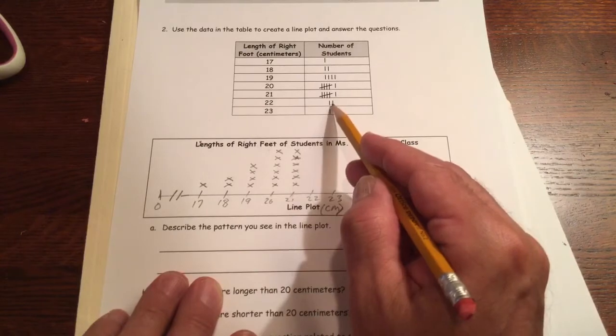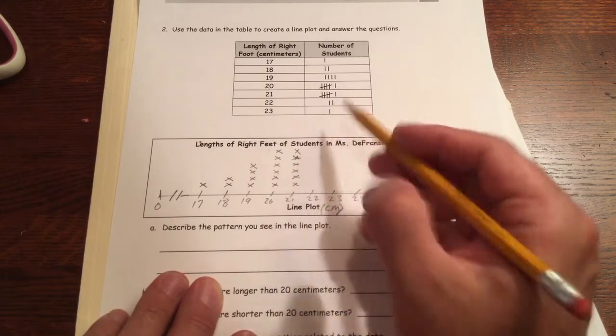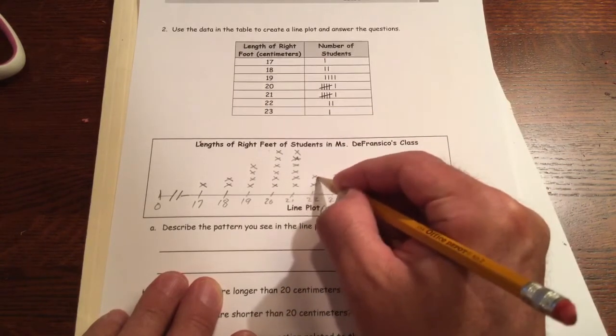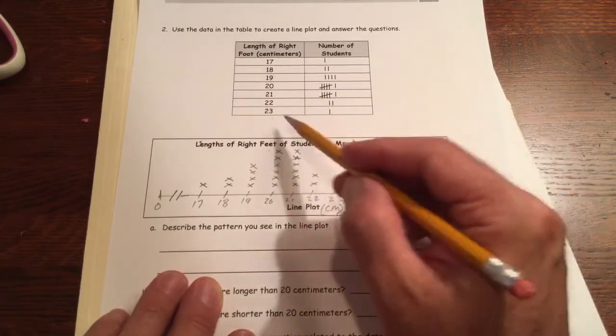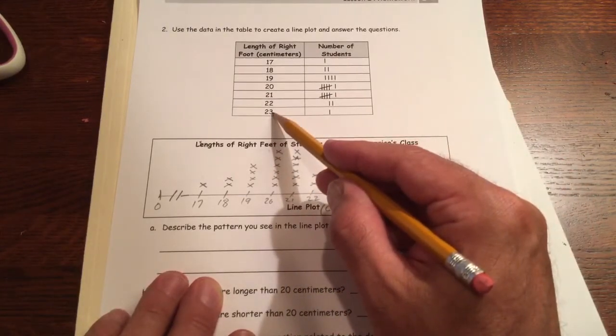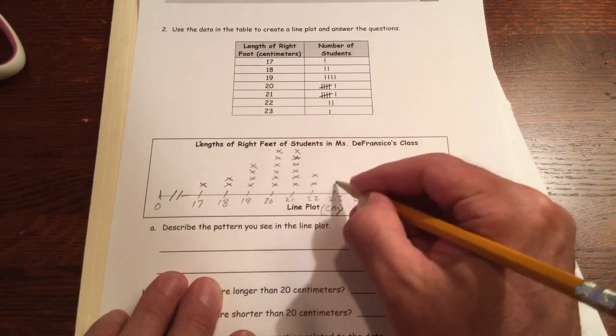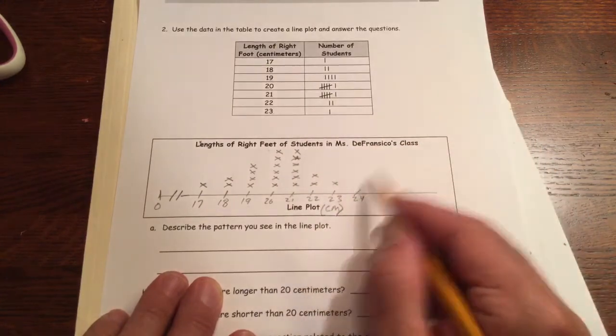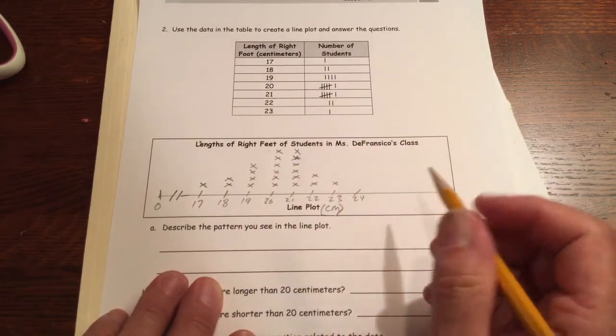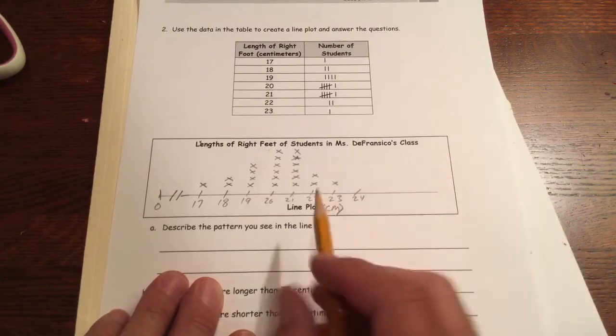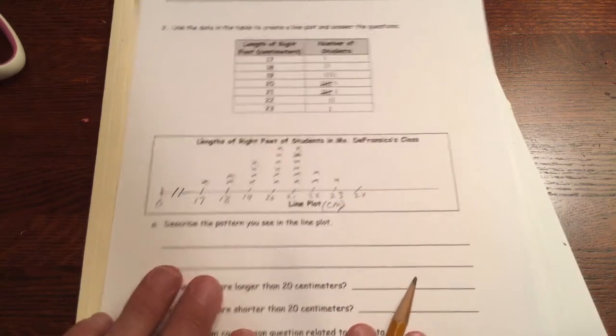And then 22 has two students, had 22 centimeter feet. And then for 23, only one. And 24, there's nobody, so just leave it there. And now we have some questions to answer. There's our line plot.